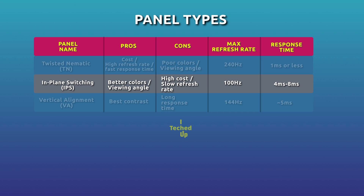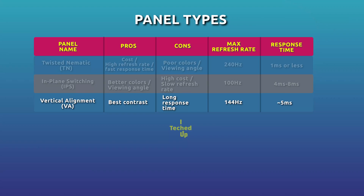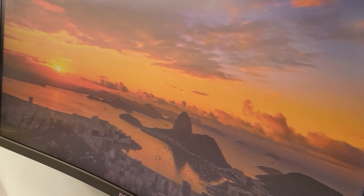I'll talk more about refresh rate and response time later. The second panel type is IPS, developed to improve the limitations of TN panels. The colors and viewing angle are very good — you can view the screen from an angle and still get accurate color reproduction. The last type is VA, which is a compromise between TN and IPS, having the best contrast ratio, a good viewing angle, as well as decent response time and refresh rate.